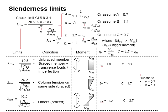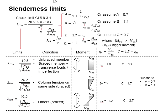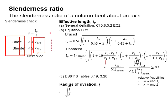Assuming A equals 0.7 and B equals 1.0, the slenderness limit is obtained. This slenderness limit is then checked against the slenderness ratio to determine whether the column is short or slender.